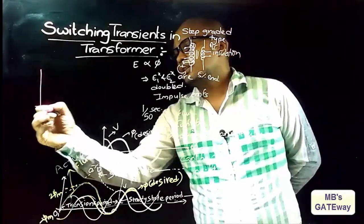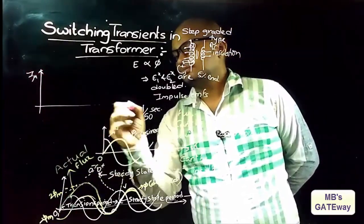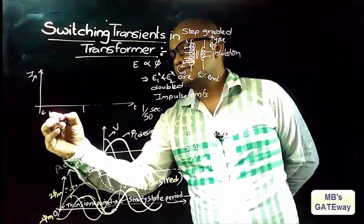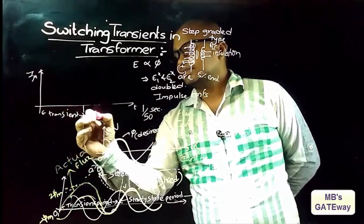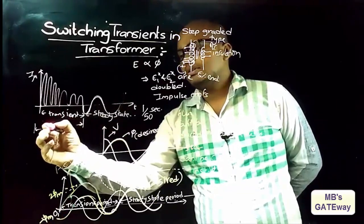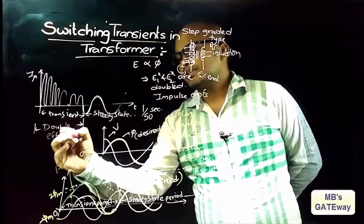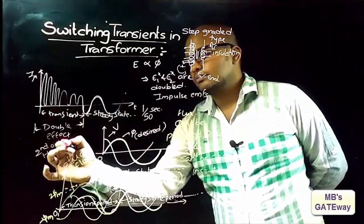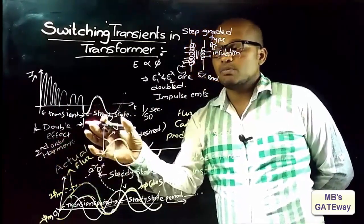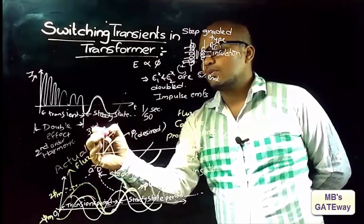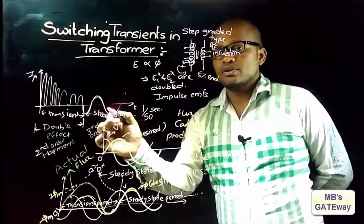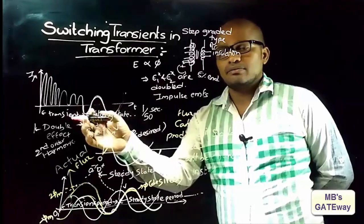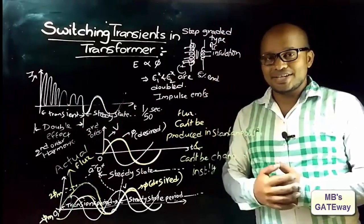If you observe the magnetizing current waveform during the transient period and steady state period — in the transient period there exists a double effect because EMFs are doubled, and in the transient period the most dominant harmonic is the second order harmonic. In steady state, the most dominant harmonic is the third order harmonic, because in steady state the waveforms are symmetric about the x-axis, so the second order harmonic gets cancelled. That is why the most dominant harmonic in steady state is the third order harmonic, whereas in transient state it is the second order harmonic.